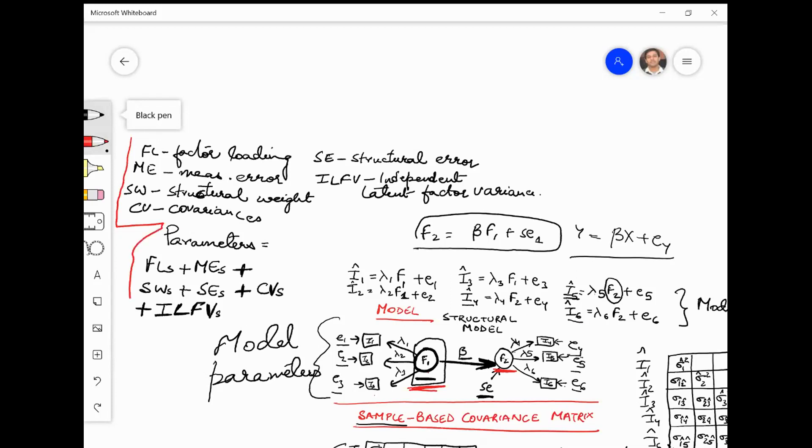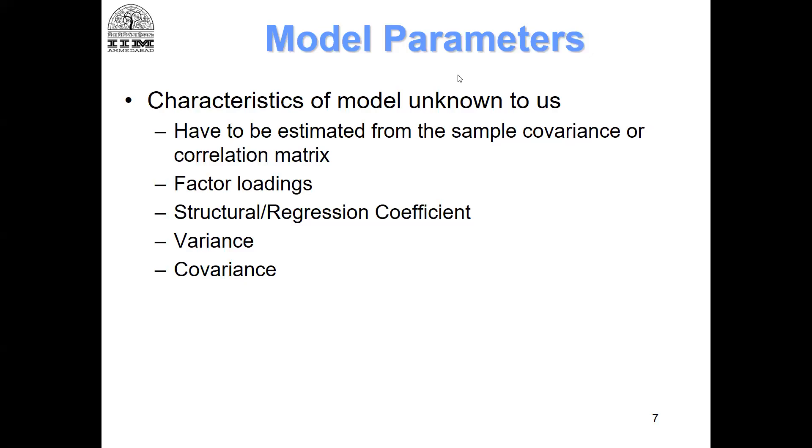These are the parameters to be computed in a structural model. Sir, the structural weight is the beta, no sir? Yes, yes. So the structural weight is the beta. Or we can say structural weight or structural path coefficient or the regression coefficient, right?